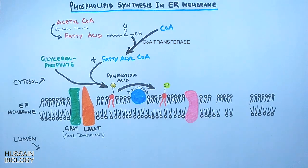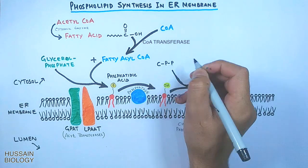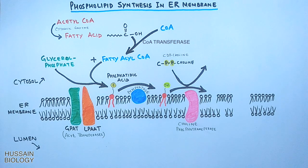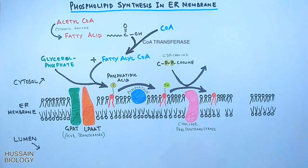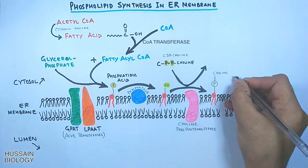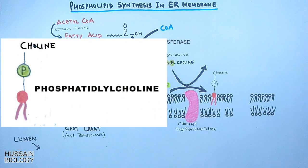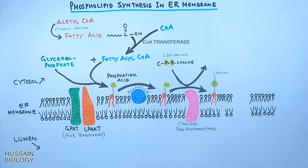In the ER membrane, the choline phosphotransferase enzyme catalyzes the reaction between CDP-choline (cytosine diphosphocholine) and diacylglycerol. A polar head group is transferred from CDP-choline to the exposed hydroxyl group of diacylglycerol, and the product formed from this reaction is phosphatidylcholine.